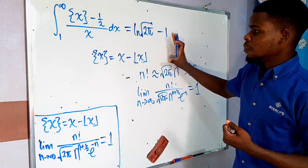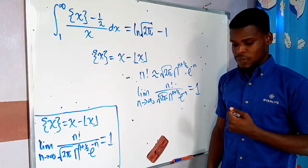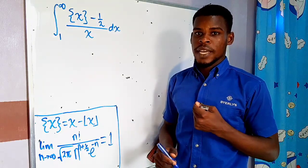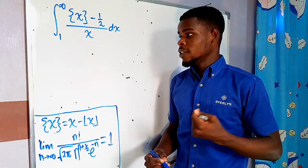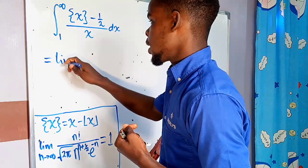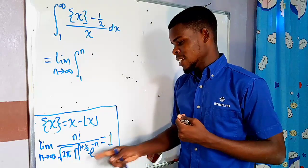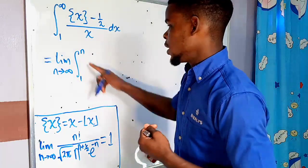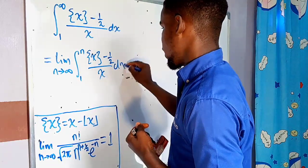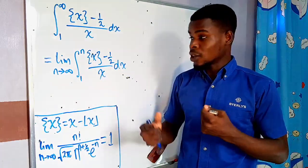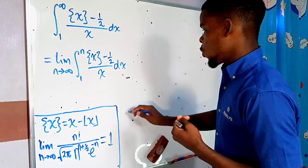So the limit as n tends to infinity of n! divided by [√(2π) · n^(n+1/2) · e^(−n)] equals 1 for large n. Now let's get into the integral. We rewrite it as the limit as n tends to infinity of the integral from 1 to n of the fractional part of x minus one half, all divided by x, dx.